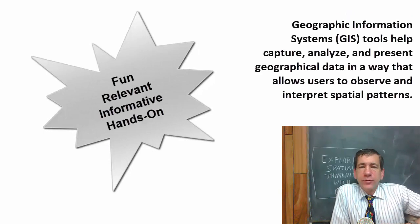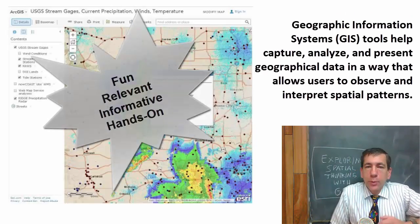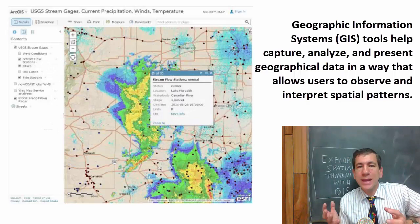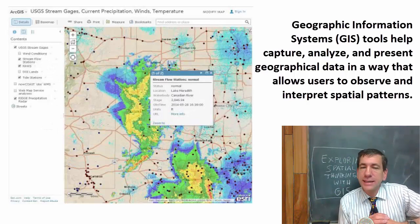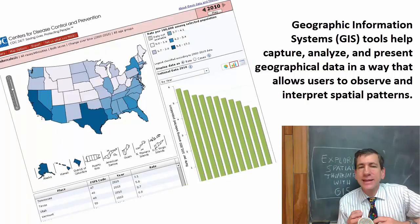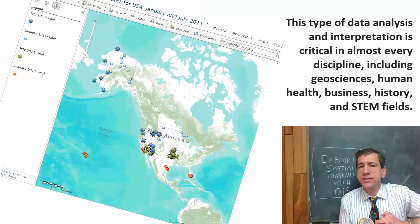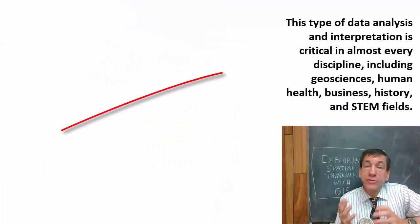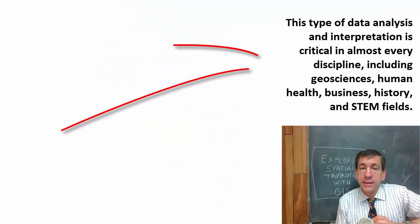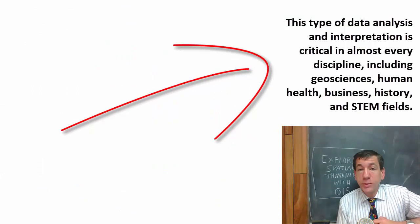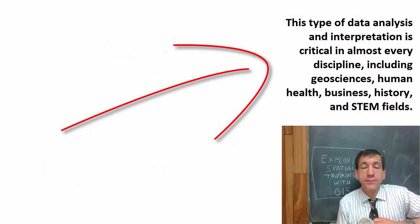Geographic Information Systems, or GIS tools, help us capture, analyze, and present geographical data in a way that allows users to observe and interpret spatial patterns. This type of data analysis and interpretation is critical in almost every discipline, including geosciences, human health, business, history, and STEM fields.